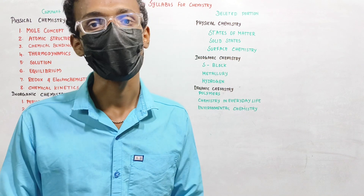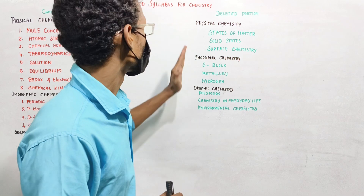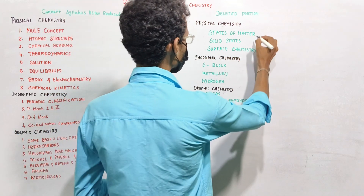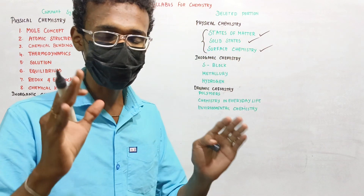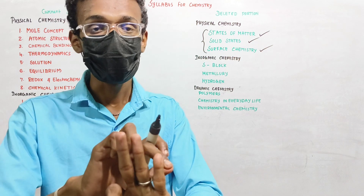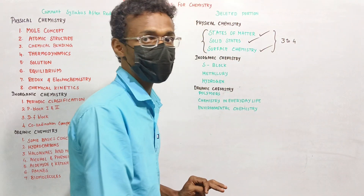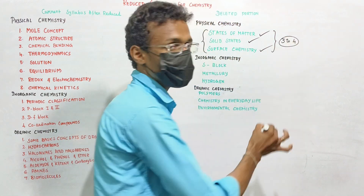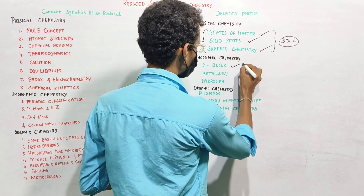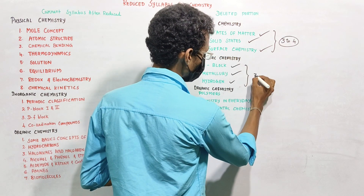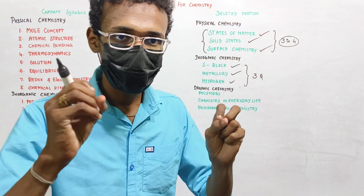Now the time is limited for you. Three to four questions come every year from certain topics, but in some topics the full theory is removed from the syllabus. Those are easy marks — three questions but the topic is fully removed, making it simple.